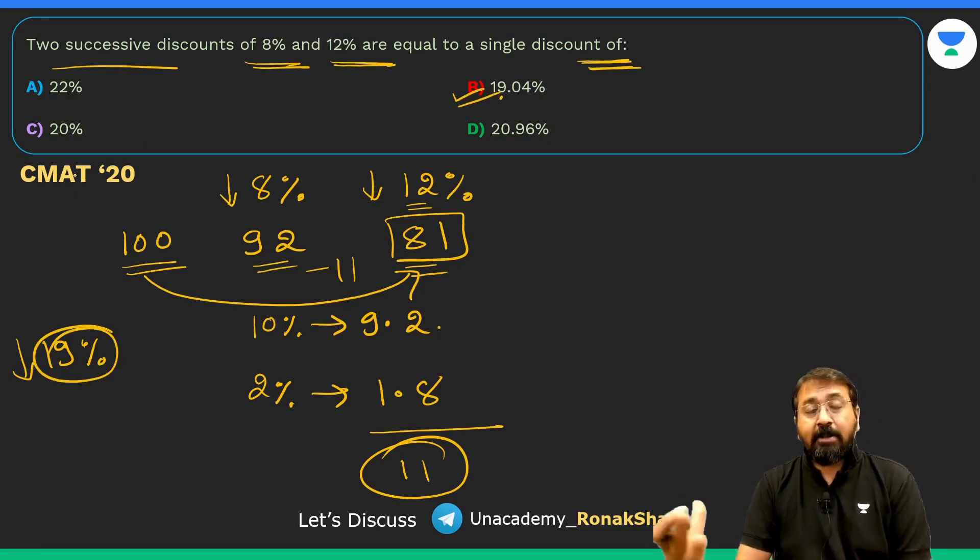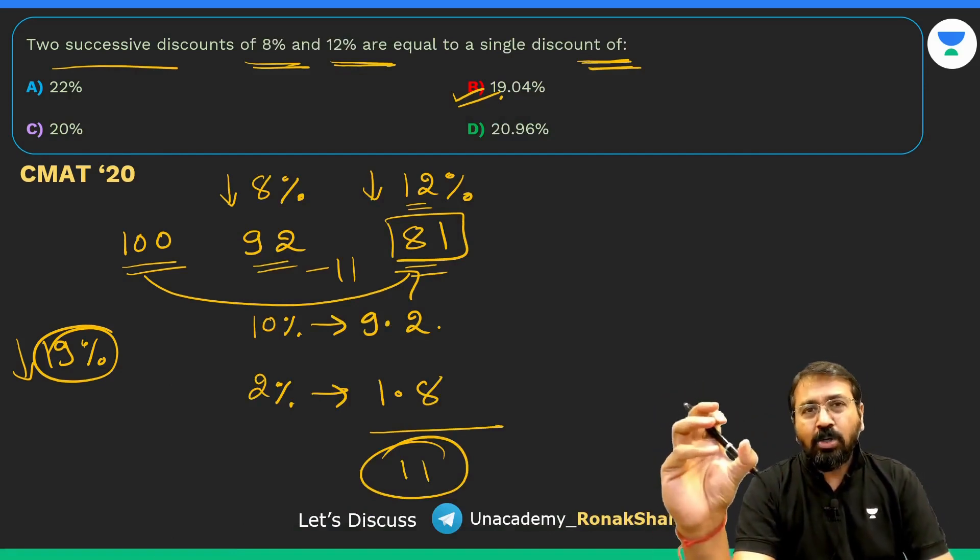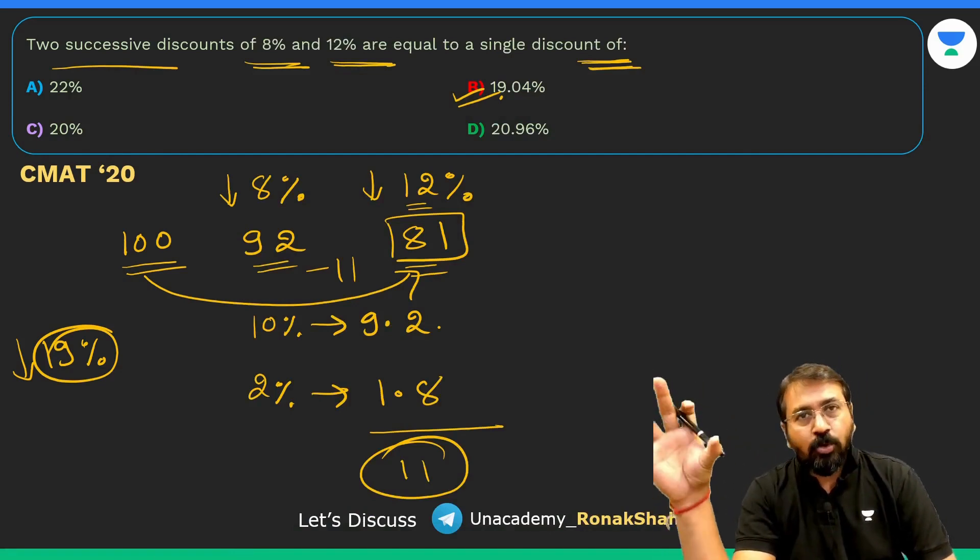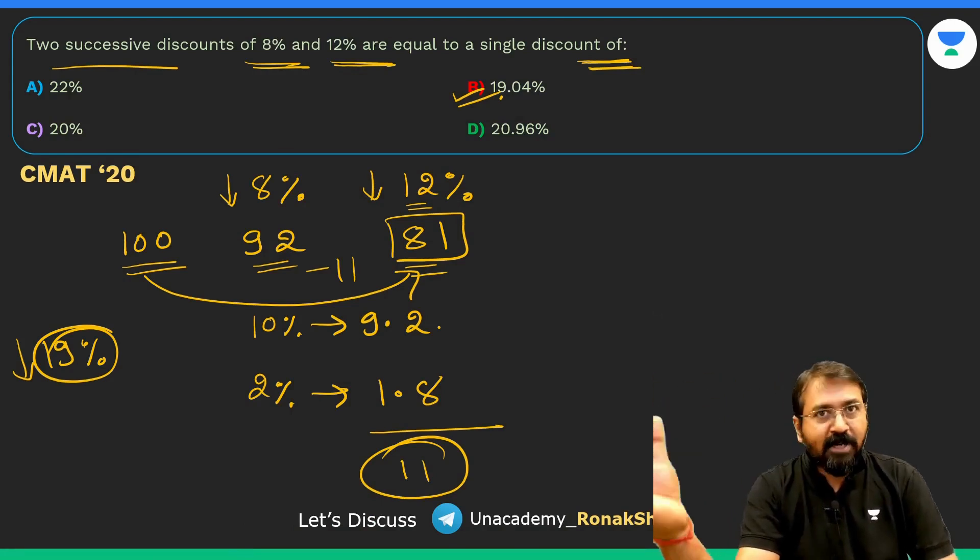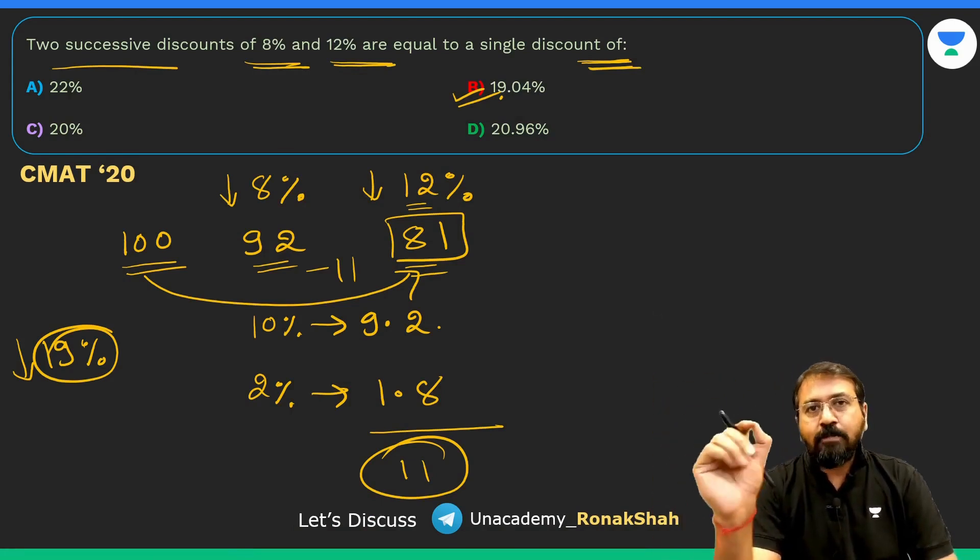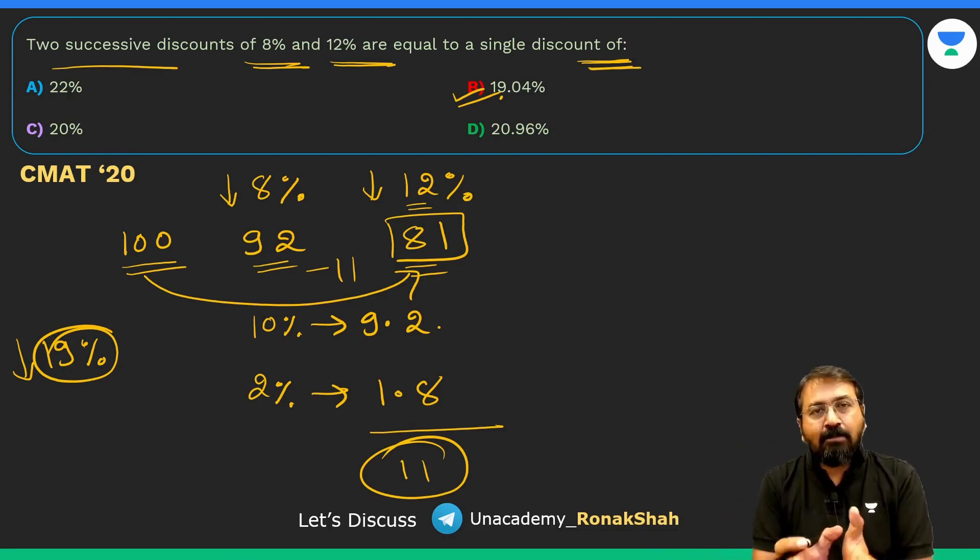We can straight away tick mark and this is CMAT 2020 question. In fact I will also show you CMAT 22 question and they are also similar. The questions are really simple. There will be some questions, about 20% questions, so I can say out of 20 questions of quant there will be about 3 to 4 questions which will surprise you.